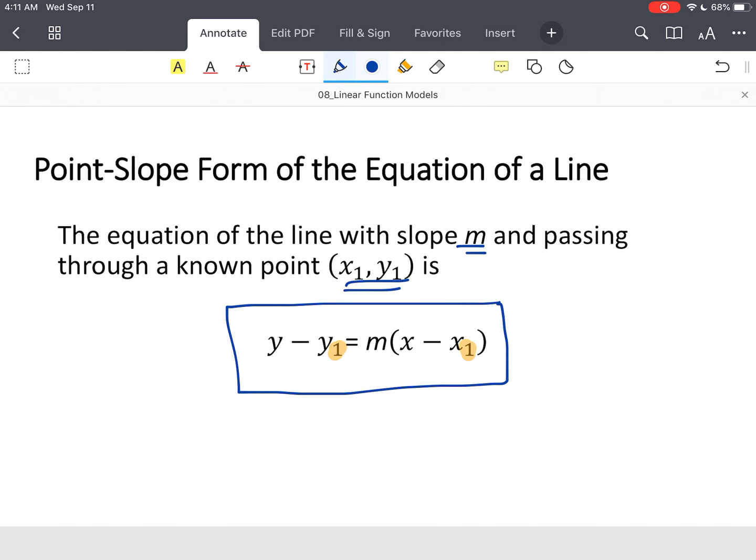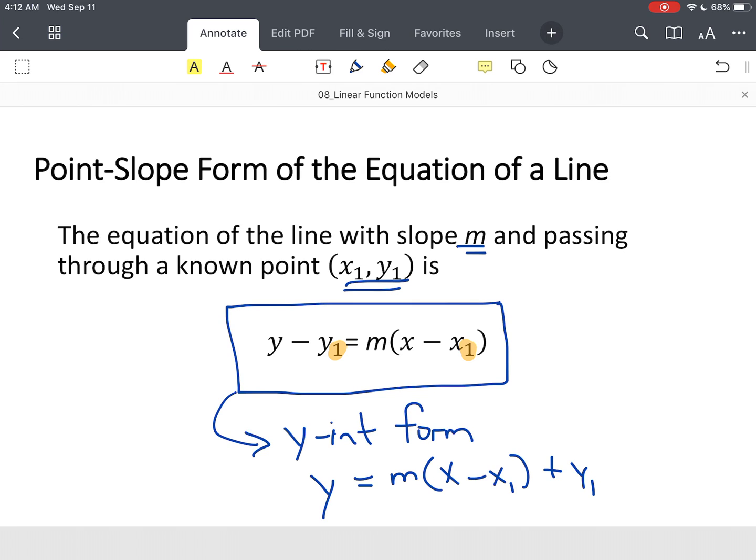Now you can actually take it a step further if you want to go from point-slope form. Let's say we want to take this a little step further and we want it to go to slope-intercept form. All we would do is simply manipulate the point-slope form and we end up with y equals slope times the difference of x and x-sub-1 plus y-sub-1. And all we did was pull the y-sub-1 or add it to both sides of the equation.